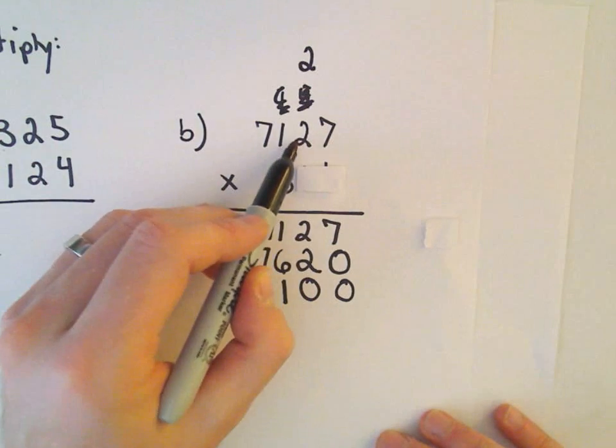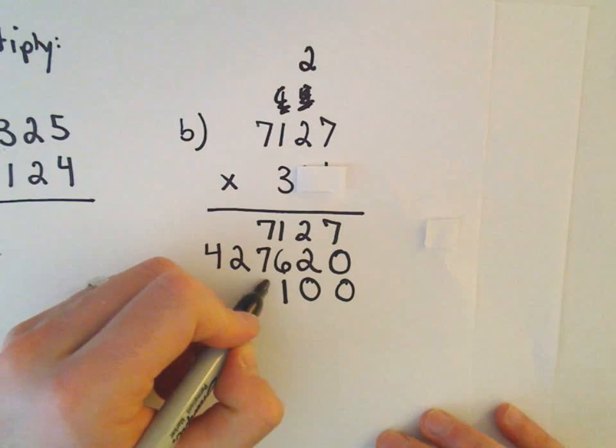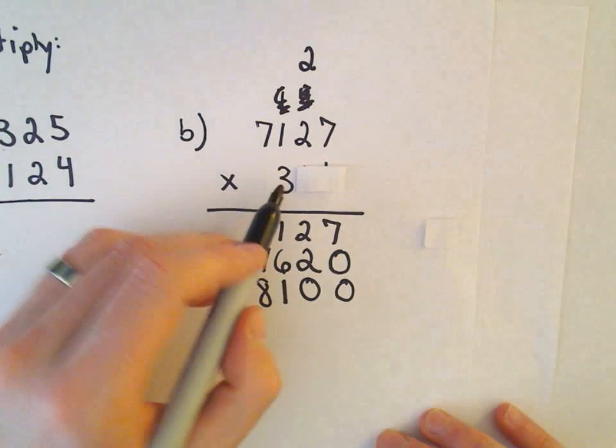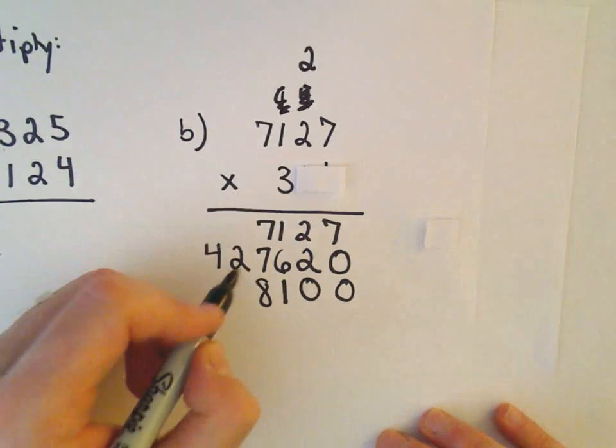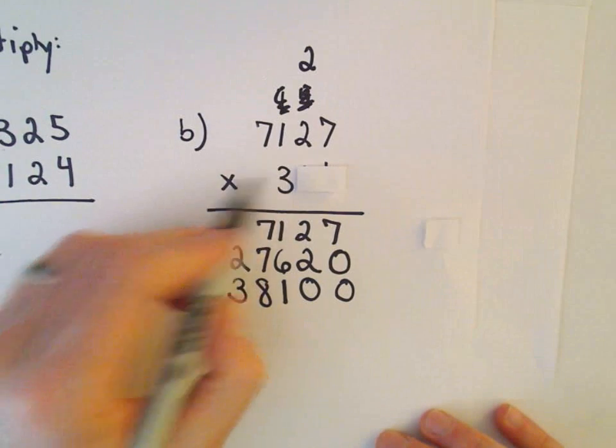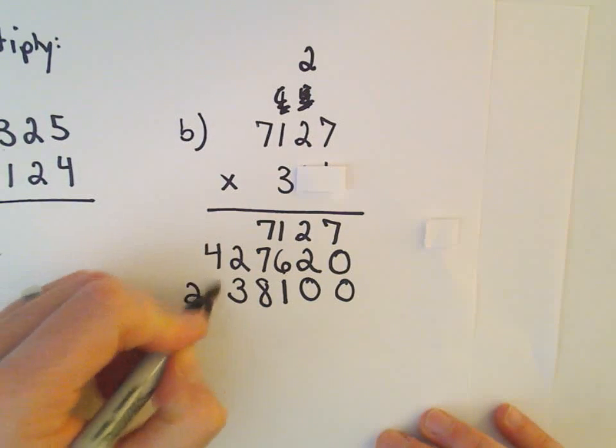3 times 2 is 6, plus 2 is 8. Let's see, so nothing to carry. 3 times 1 is 3. 3 times 7 is 21.